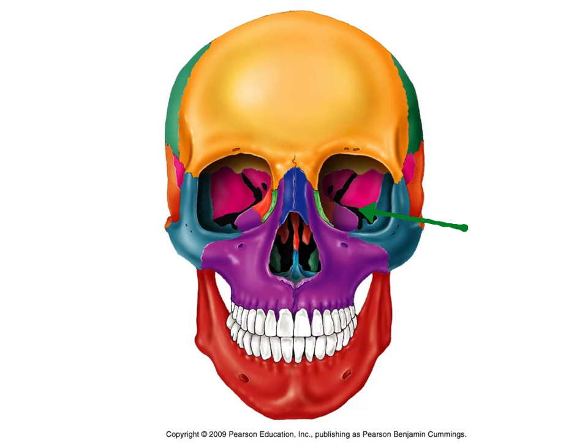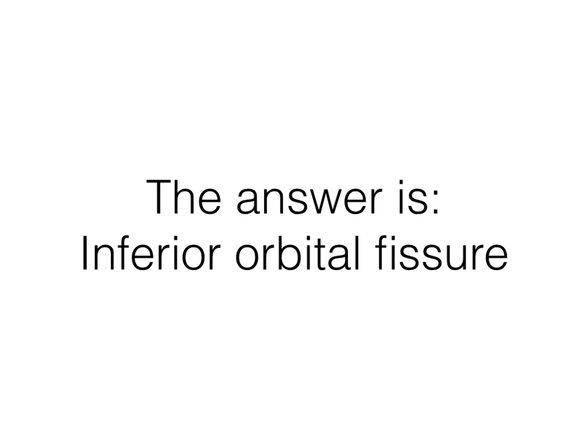Another one in that orbital area. This one has a very similar name. It's on the bottom, so we're going to use inferior orbital fissure — just like the superior one, except it's on the bottom.